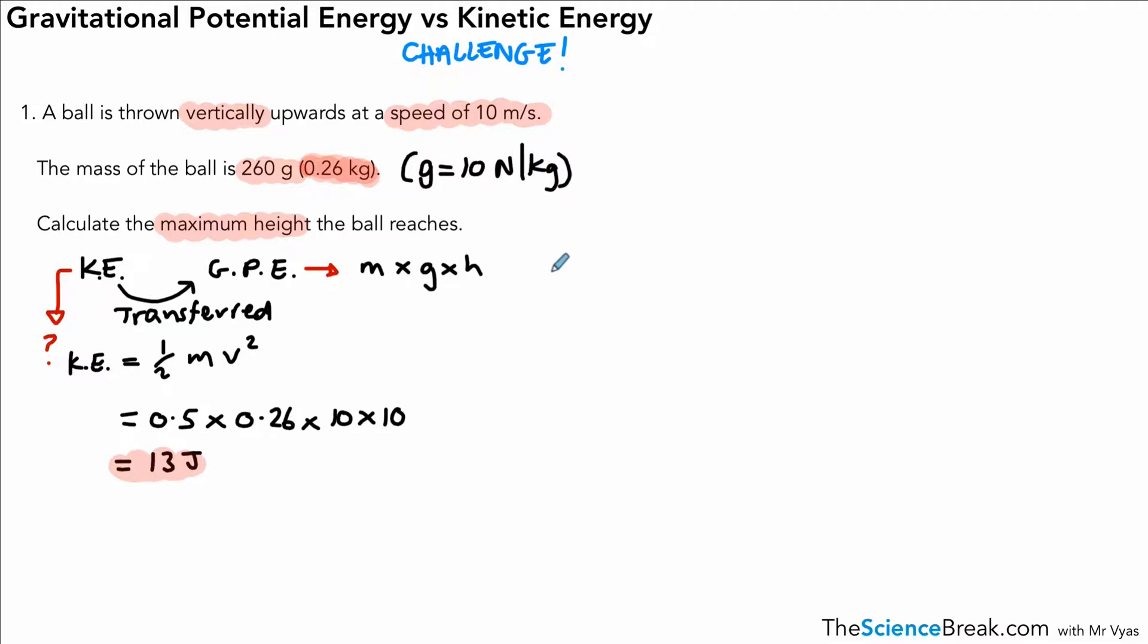I should mention that we should use 10 newtons per kilogram for g in this example. So we've got 13 joules = m × g × h. The mass is 0.26, g as we've been told is 10, and we don't know the height. So here we need to do a little bit of rearranging. We've got 13 = 2.6 × h. I got 2.6 from multiplying 0.26 times 10. We then divide 13 by 2.6, and that will give us the height. If you put that into your calculator, you'll get an answer of 5, and it's a height, so it's 5 meters.